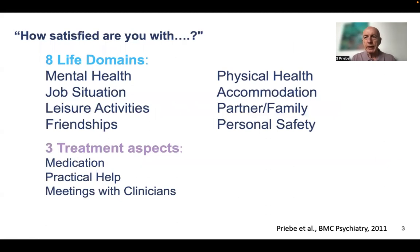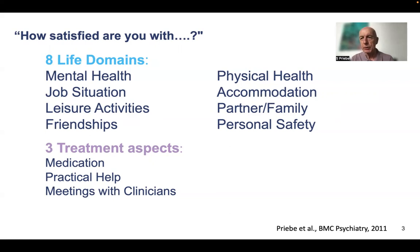The Dialogue Scale has 11 questions: 'How satisfied are you with...' and then the life domains — mental health, physical health, job situation, accommodation, leisure activities, partner/family, friendships and personal safety — and three treatment aspects: medication, practical help, and meetings with the clinicians in the service.